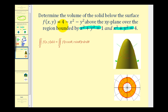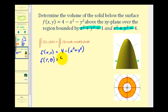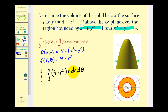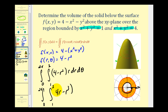The first thing we do is rewrite the function as a polar equation. Writing it as 4 − (x² + y²), and since x² + y² = r², we get f(r, θ) = 4 − r². Setting up our double integral: the function is 4 − r², with the extra factor of r, then dr dθ. The limits for r go from 1 to 2, and for a complete revolution theta goes from 0 to 2π. Distributing the r gives us 4r − r³ in the integrand.